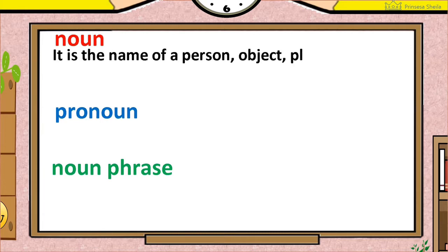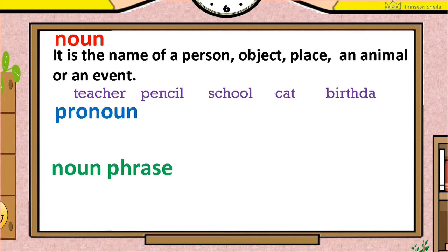Noun is the name of a person, object, place, an animal, or an event. Examples are teacher, pencil, school, cat, and birthday.